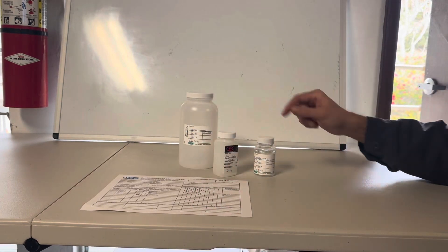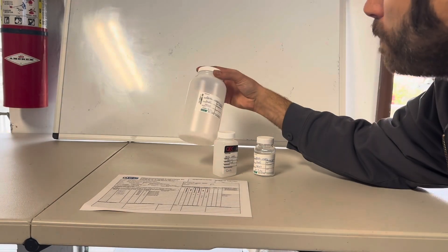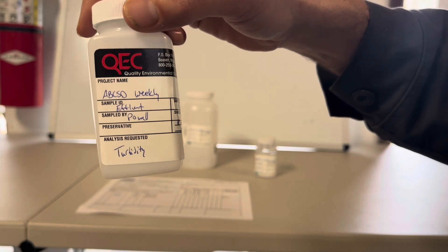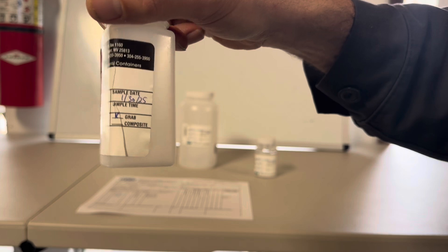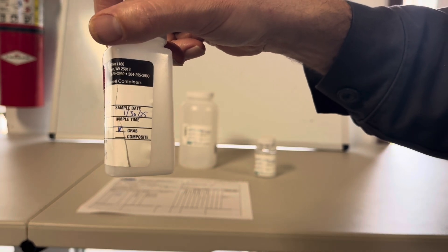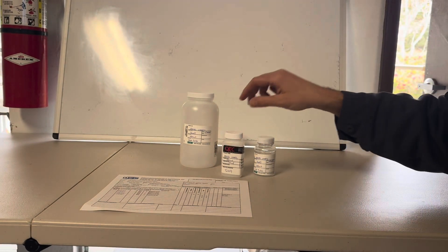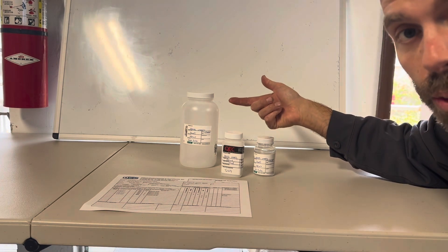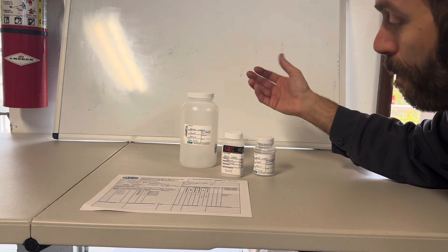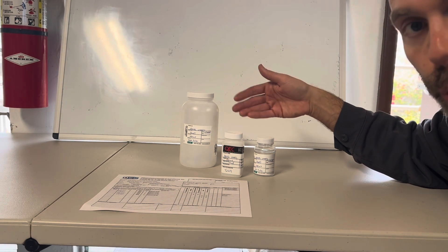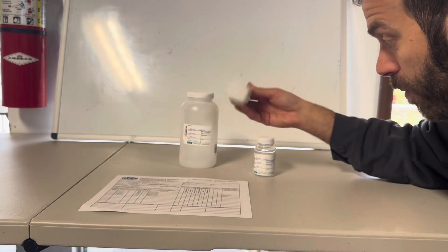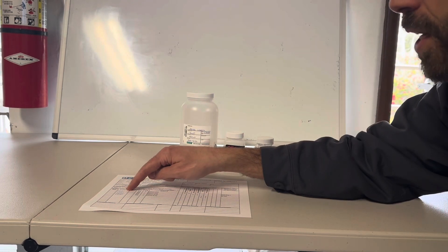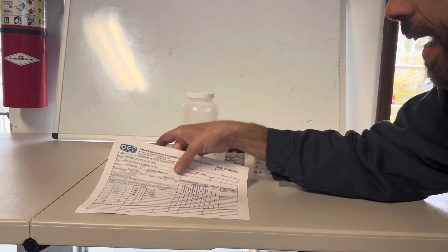Just a quick note about chains of custody and labeling your bottles. On the label you'll have a project name, what you're sampling, your name, the analysis, and the sample date. There's no time on this one yet since I haven't taken it. You'll also mark whether it's a grab or composite. Dates and times are critical for hold times — some samples have a 14-day hold time, some have a 6 or 8-hour hold time. The clock starts ticking the moment you write down the time and take the sample.